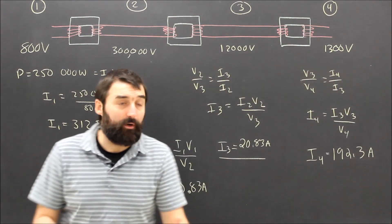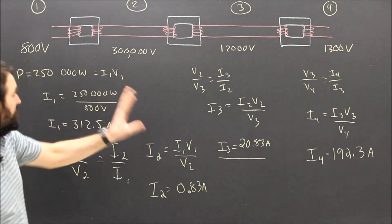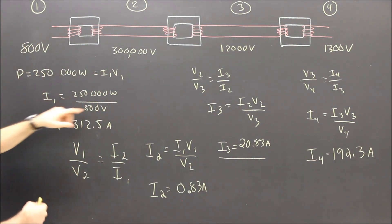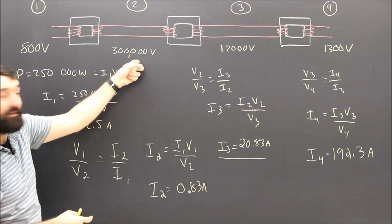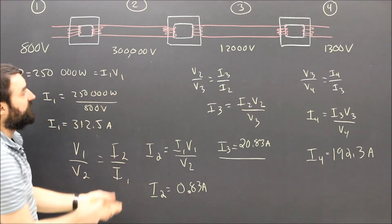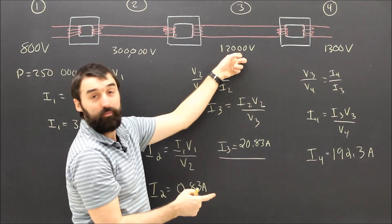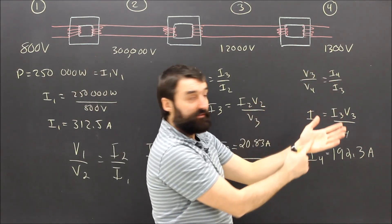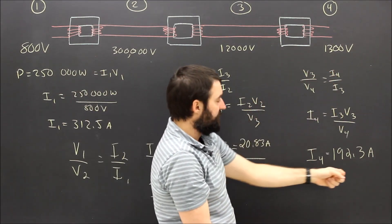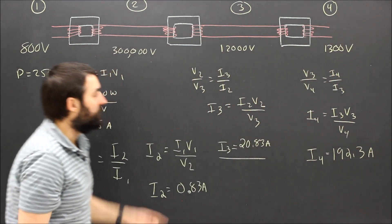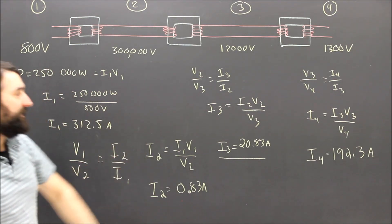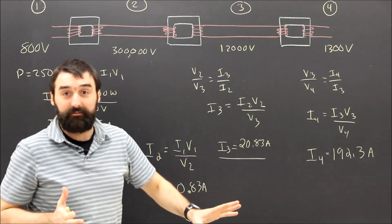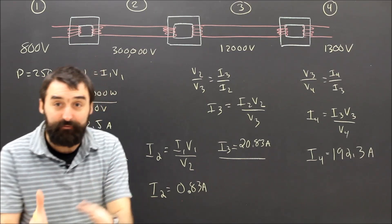Hopefully an easy question — the math is really simple. You can see what I mean: it's just 250,000 divided by 800 — that's the current here. 250,000 divided by 300,000 — that's the current here. 250,000 divided by 12,000 — that's the current here. 250,000 divided by 1,300 — that's the current here. The lower the voltage, the higher the current. The higher the current, the more waste in the wires, but the safer the wires are.